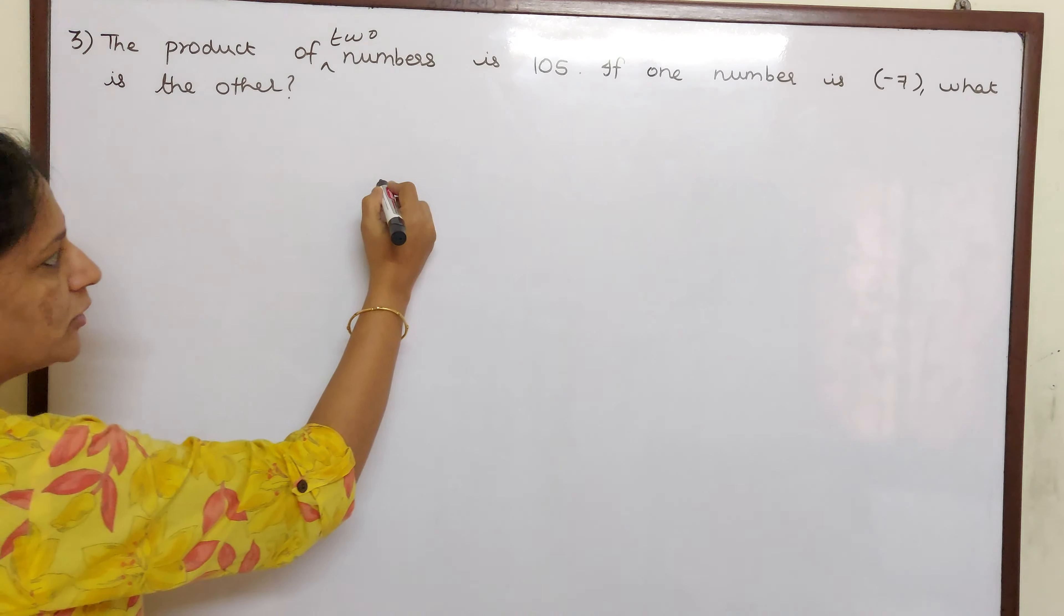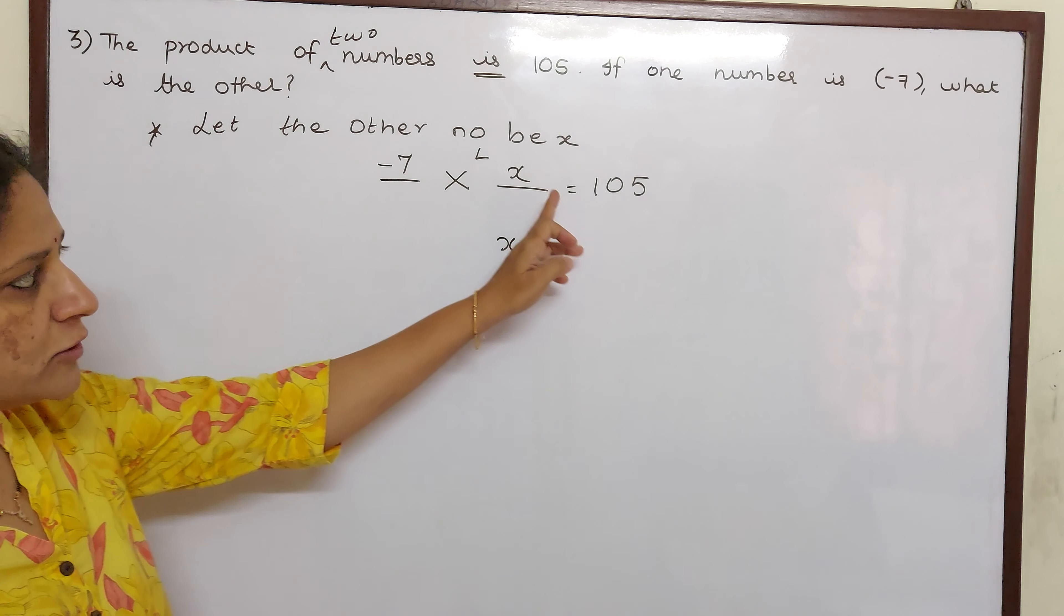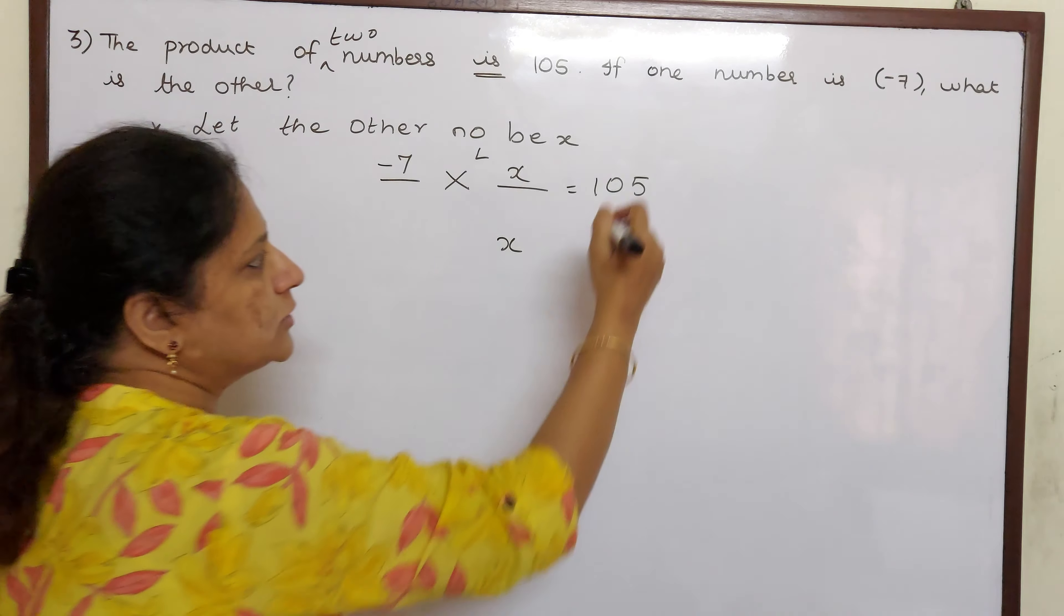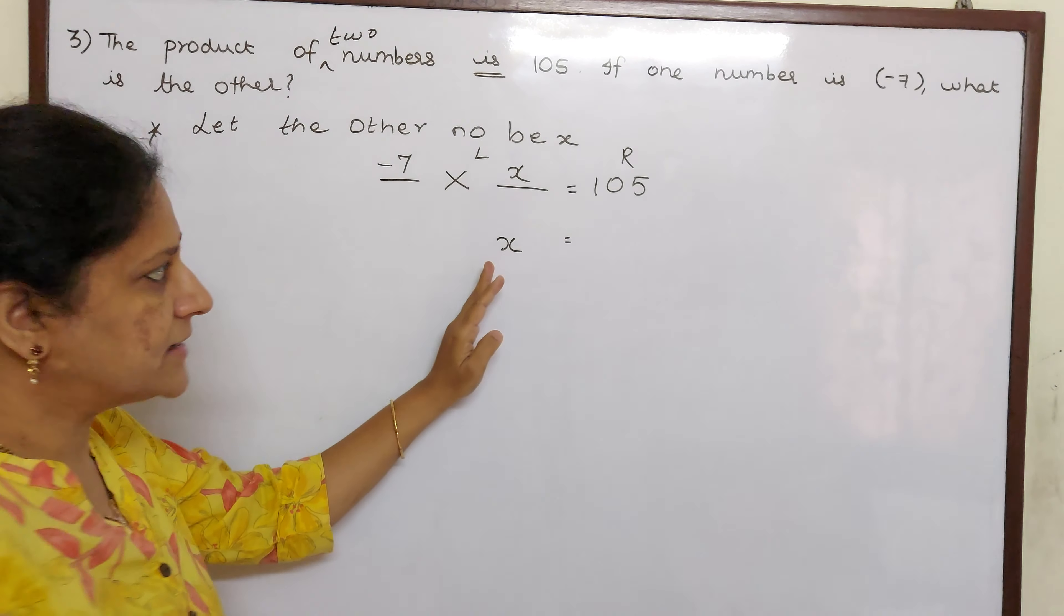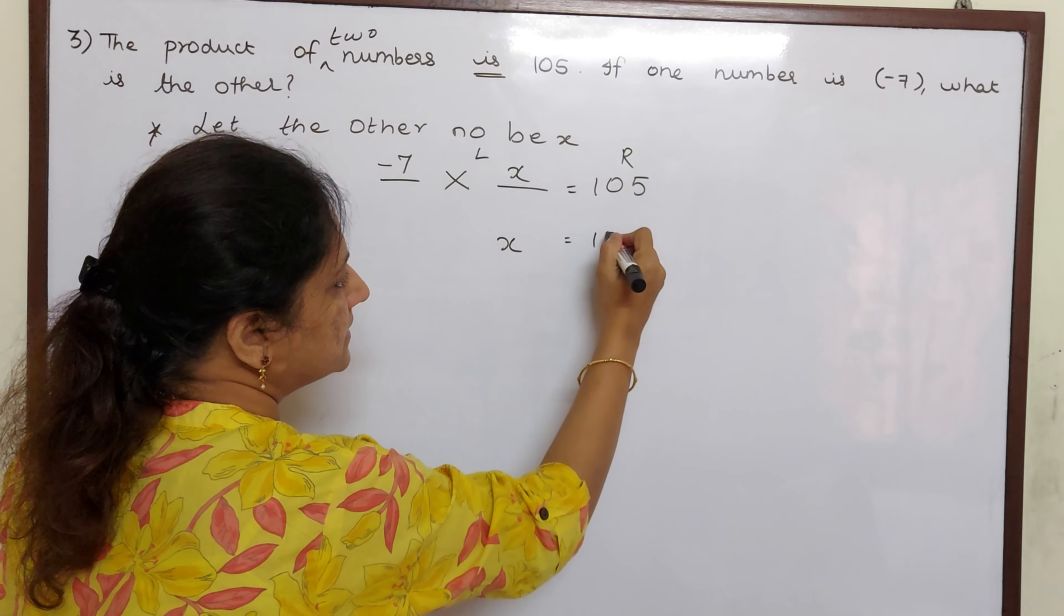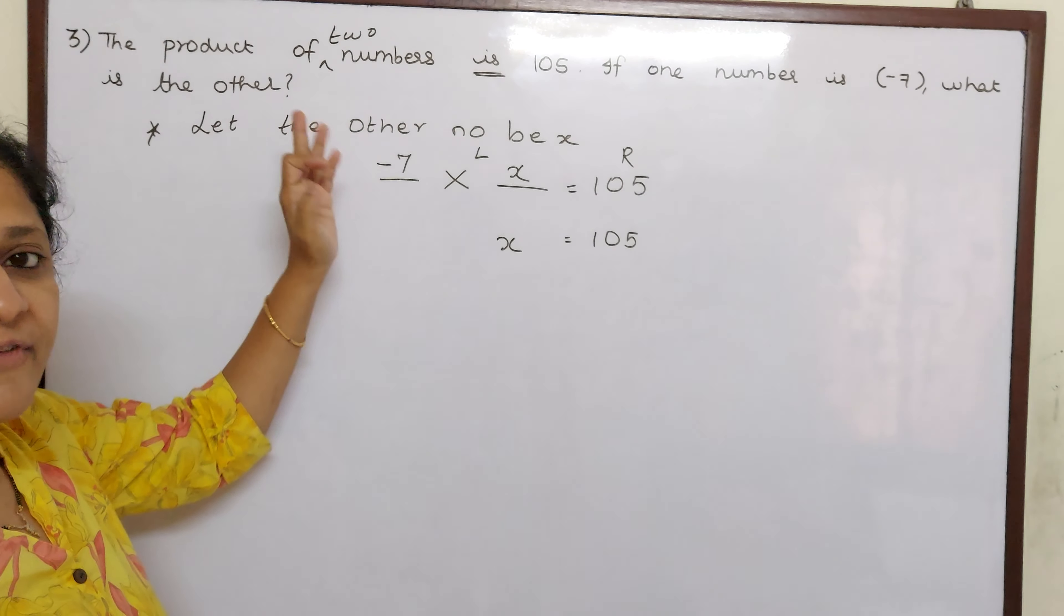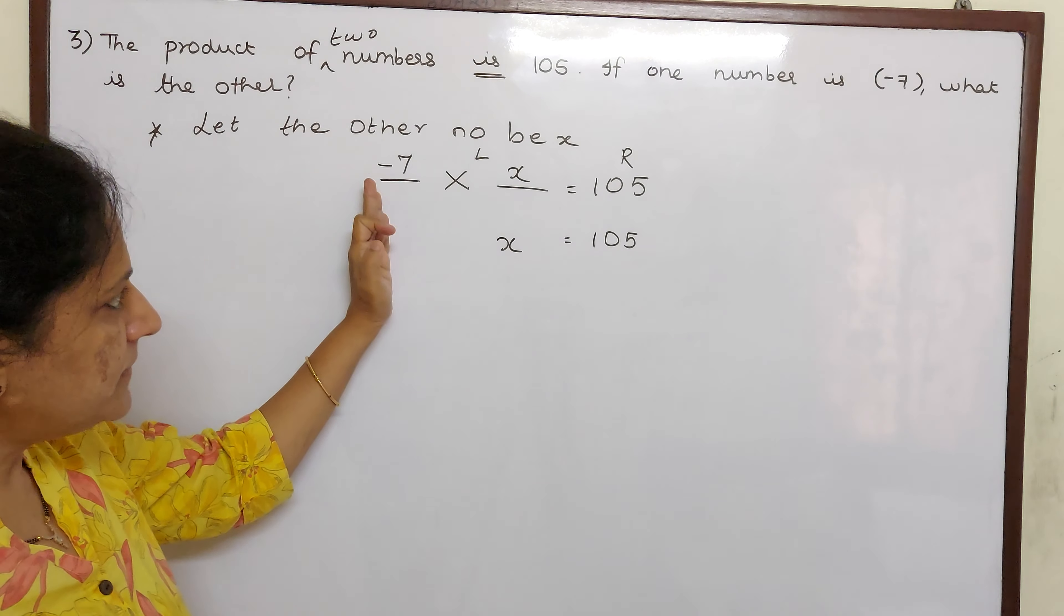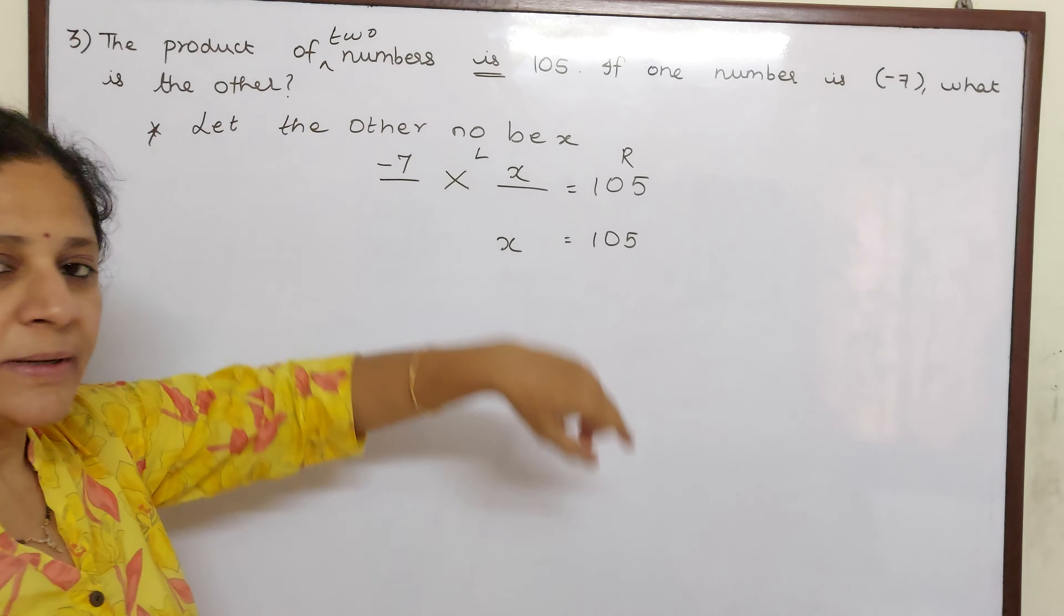Now this is a case of simple linear equation children. We will keep X here as it is in the left hand side. Whatever is before equal to is left hand side. And whatever is after equal to is right hand side. So X is in the left hand side. Keep it here as it is. 105 is in the right hand side. Keep here as it is. Now minus 7, when you transpose from left hand side to right hand side, multiplication will become division.